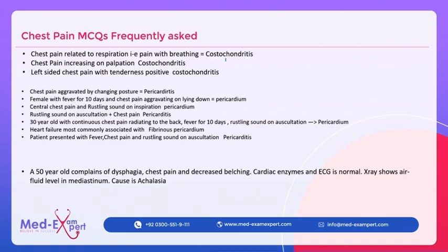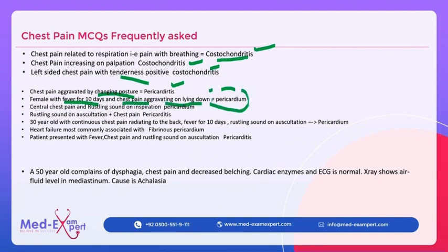Chest pain related to respiration — think costochondritis. Pain increasing on palpation means costochondritis. Tenderness aggravated by position change suggests pericarditis or pleurisy. Fever for 10 days after a viral infection, with pain aggravating on lying down and a rustling sound on auscultation — this is the buzzword for pericarditis. Pericarditis is most commonly associated with fibrinous pericarditis. Patient presenting with fever, chest pain, and rustling sound on auscultation — diagnosis is pericarditis.